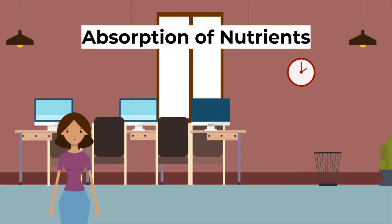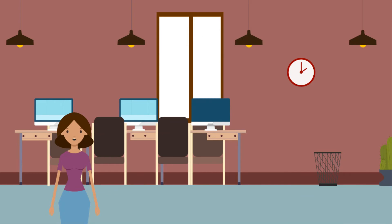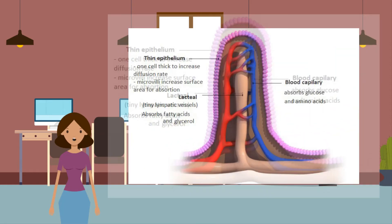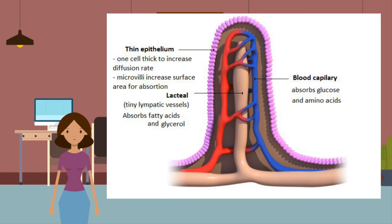Now let's look at absorption of nutrients. You need to know that large molecules are digested so they can be absorbed through the small intestine walls. Absorption is the movement of digested food molecules from inside the small intestine, through the wall of the small intestine, and into the blood system. The small intestine has a very good blood supply and very thin lining structures called villi. The villi cover the inner surface of the small intestine in uncountable numbers, greatly increasing the surface area compared to a flat surface and hugely increasing absorption efficiency.